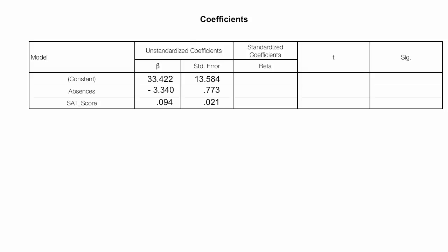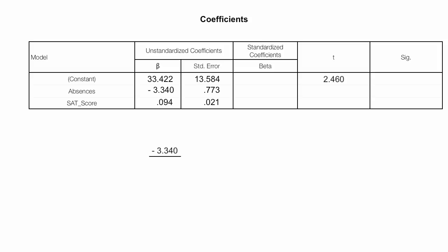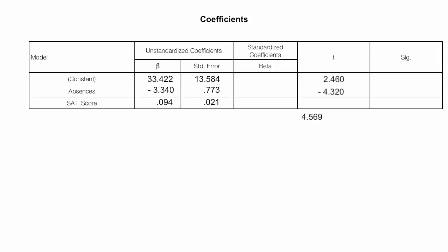Now I'll talk about T scores. T is simply the beta value divided by its standard error — that gives the T score. My T score for the first beta, or constant, is 2.46 (33.422 divided by its standard error). For absences, the beta divided by its standard error equals negative 4.320. For SAT score, 0.094 divided by 0.021 equals 4.569.